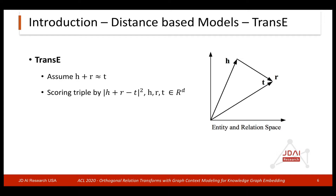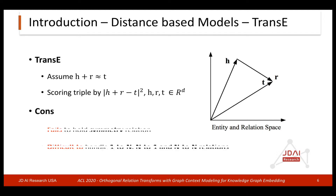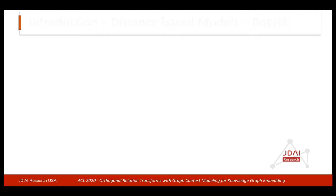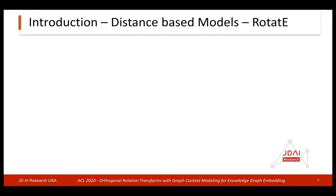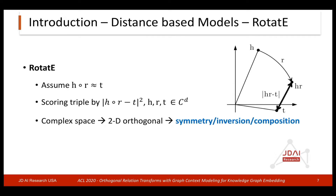Now let's review some knowledge graph embedding methods. The well-known one is called TransE, where relations are represented as translations in embedding space. This picture shows the geometric interpretation of the TransE model. However, TransE fails to model symmetric relations and is also difficult to handle 1-to-n, n-to-1, and n-to-n relations. There are many distance-based models; one of the recent state-of-the-art is called RotateE, which models relations as rotation in the complex plane.